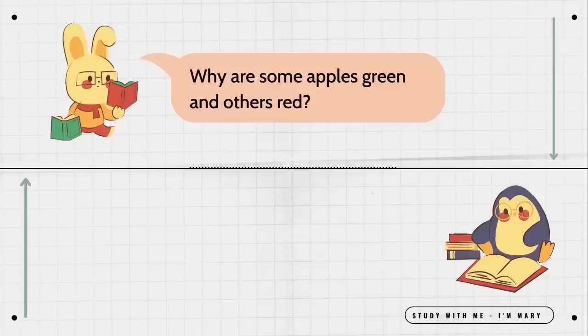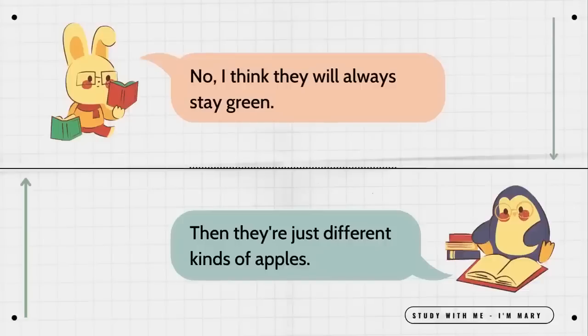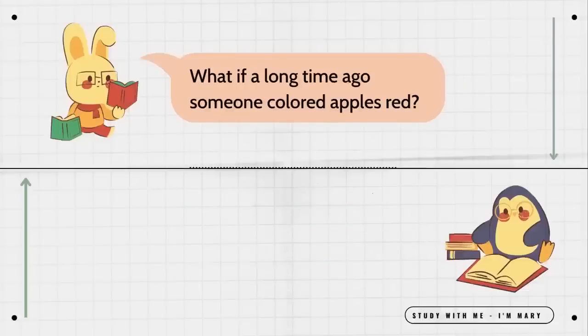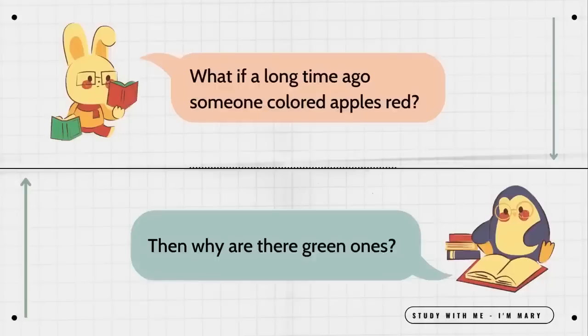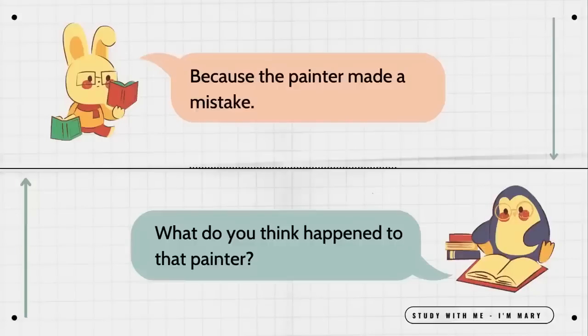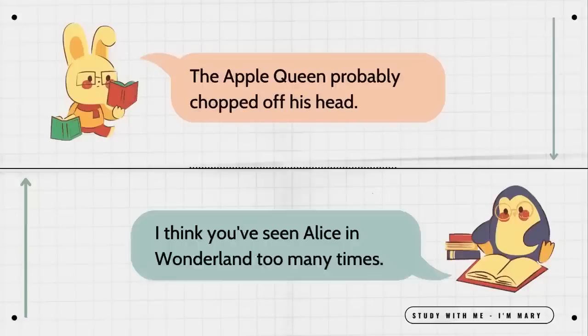Why are some apples green and others red? Won't the green ones turn red later? No, I think they will always stay green. Then they're just different kinds of apples. But what makes them different? Their genetics I guess. What if a long time ago someone colored apples red? Then why are there green ones? Because the painter made a mistake. What do you think happened to that painter? The apple queen probably chopped off his head. I think you've seen Alice in Wonderland too many times.